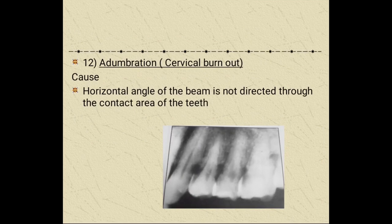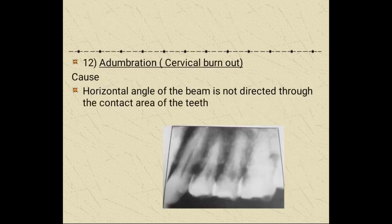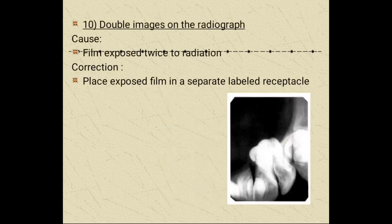Cervical burnout occurs when the horizontal angle of the beam is non-directed through the contact area of the teeth. You can see the cervical burnout on the radiograph where the beam misses the contact area. Then there is the double image on the radiograph, which is due to the film being exposed twice to radiation. Always place exposed film in a separate, labeled receptacle.